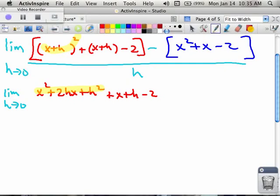In the blue, the minus sign in front means change all the signs. So I get minus x squared minus x plus 2. And don't forget, we still have that this thing is all over h.